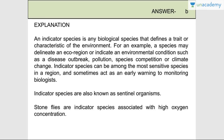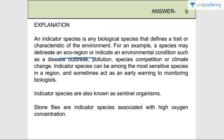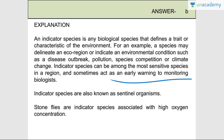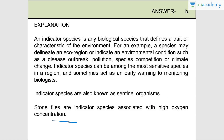An indicator species is any biological species that defines a trait or characteristic of the environment. A species may delineate an ecoregion or indicate an environmental condition such as a disease outbreak, pollution, species competition, or climate change. Indicator species can be among the most sensitive species in a region and can act as an early warning to monitor biologists. They are also known as sentinel organisms. Stoneflies are indicator species associated with high oxygen concentration.